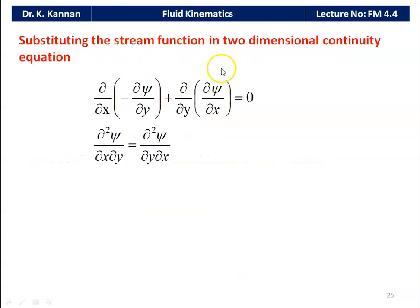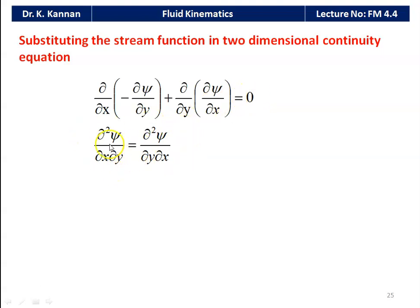Substituting the stream function into the two-dimensional continuity equation: ∂/∂x(−∂ψ/∂y) + ∂/∂y(∂ψ/∂x) = 0. Simplifying, we conclude that ∂²ψ/∂x∂y = ∂²ψ/∂y∂x.